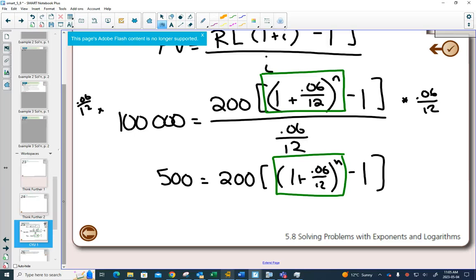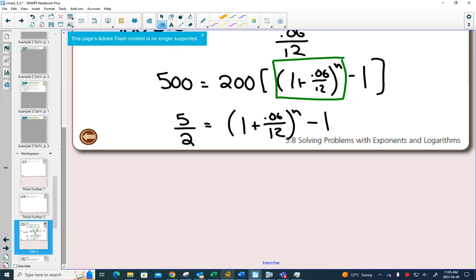So you have to look at the equation and think about your order of operations, what needs to be undone. First, in this case, since there's the brackets, you should divide both sides by 200 to move the 200, or get rid of the 200 on the left-hand side. If I divide by 200 and simplify, 500 divided by 200 is 5 over 2. And at this point, can you see that I don't need the big square brackets anymore?